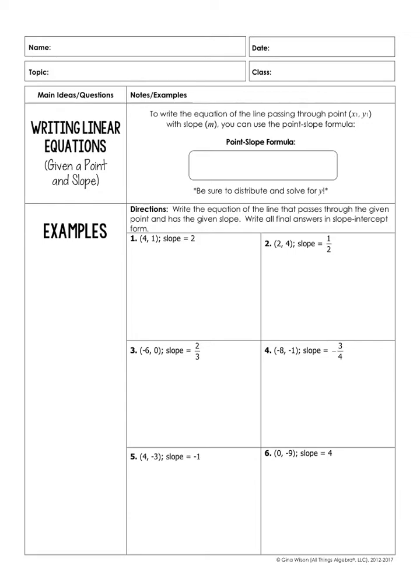There's another formula we can use when we're given a point and a slope. So instead of giving the slope and a y-intercept, we're given a point on our line and our slope and it's called the point-slope formula. Kind of makes sense, huh?